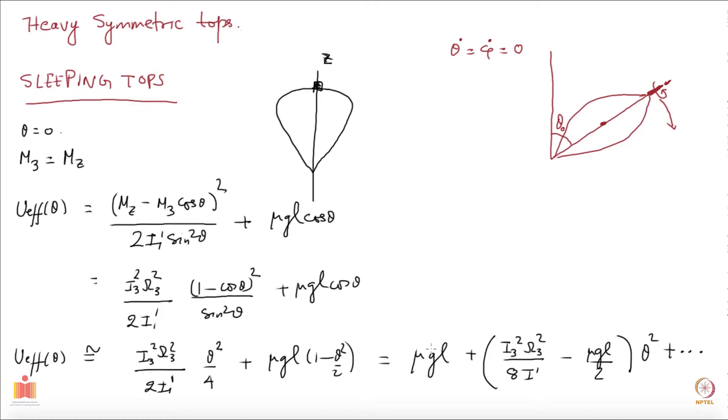This is the constant piece I am not bothered by that and whether the equilibrium at theta equal to 0 is stable or not is determined by this coefficient. If this is positive that would mean that the potential energy increases as you increase theta and that would imply that equilibrium is stable.